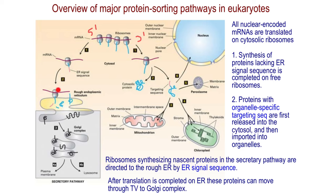In that case, the process of making the polypeptide would continue on the rough endoplasmic reticulum, and the polypeptide chain would go inside the endoplasmic reticulum and be folded there. It can also go through the Golgi complex, where proteins would be modified and folded, and then secreted from the cell. We call this the secretory pathway.